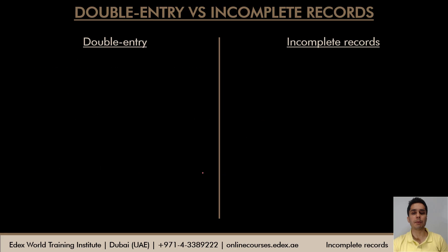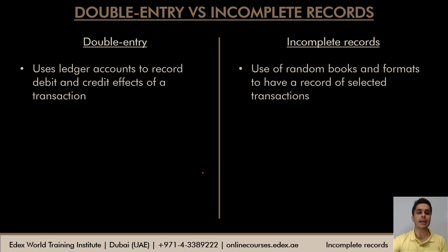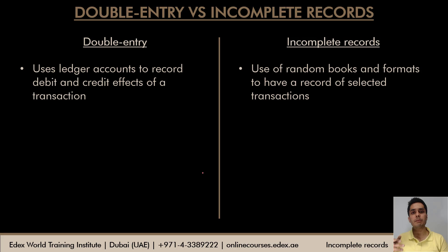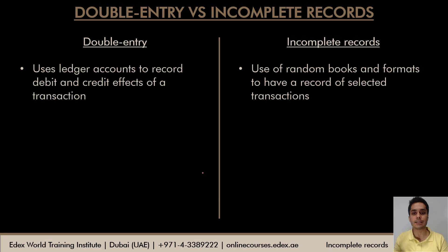So what is the difference between double entry and incomplete records? In double entry bookkeeping, every transaction is given two effects — one debit effect and one credit effect. We prepare ledger accounts, so every transaction is recorded in at least two accounts, and debit is always equal to credit. But in incomplete records there is no such system. The firm or proprietor may maintain random books as per their convenience, with no systematic debit and credit recording.